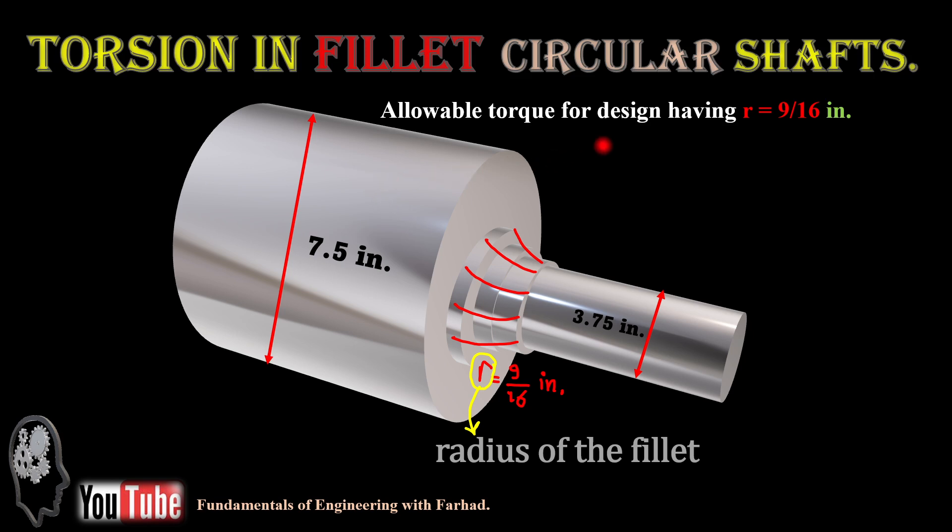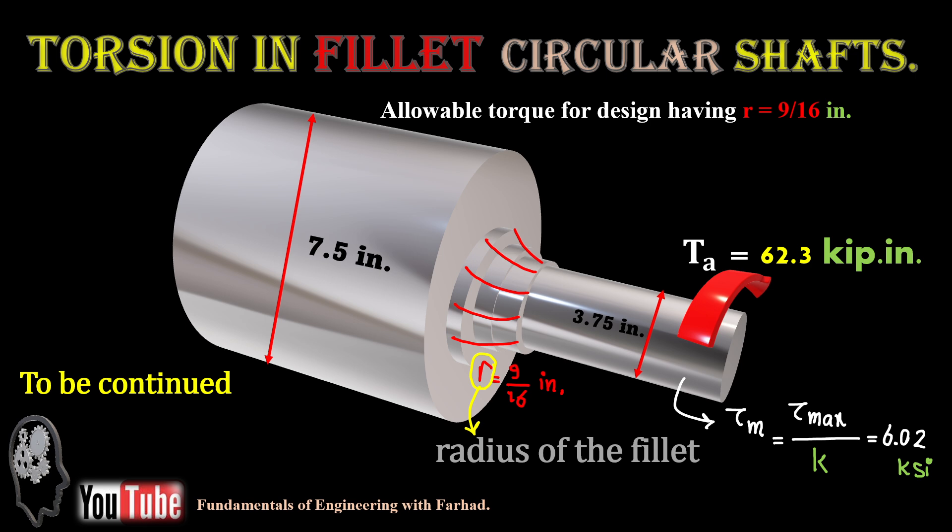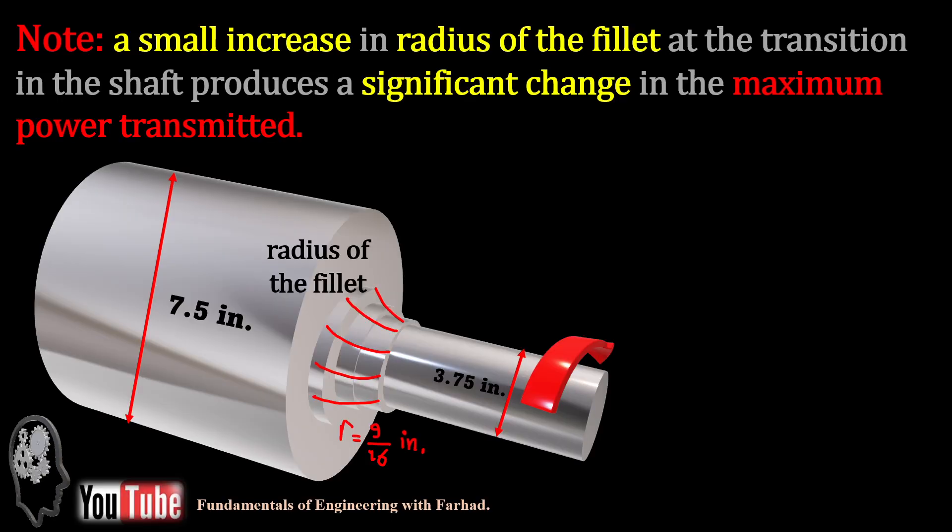For allowable torsional torque for design having R of 9 over 16, it's 62.3 kilopound inches, and tau maximum is 6.02 ksi. We already calculated the power which can be transmitted, which is 890.